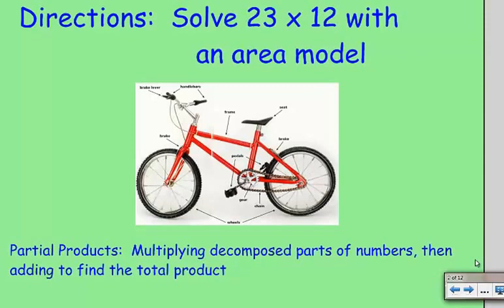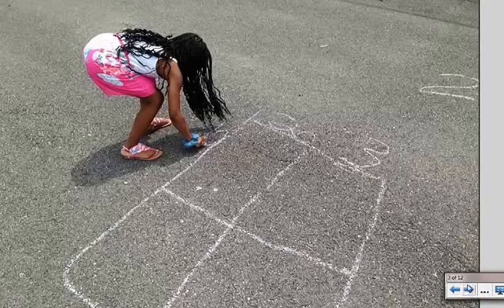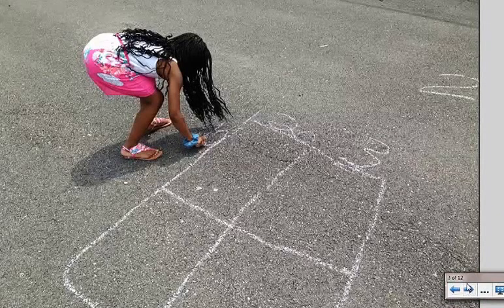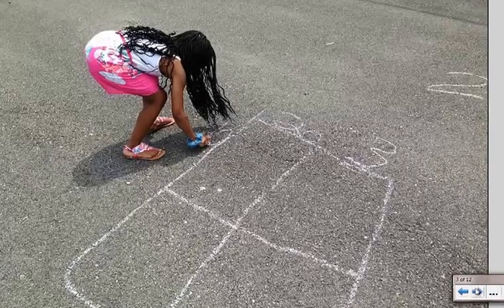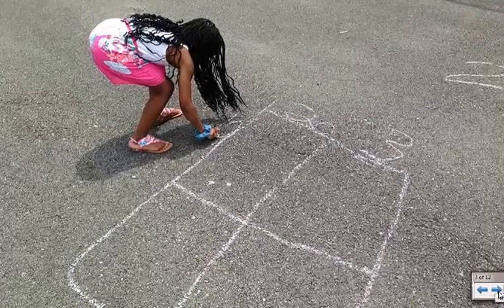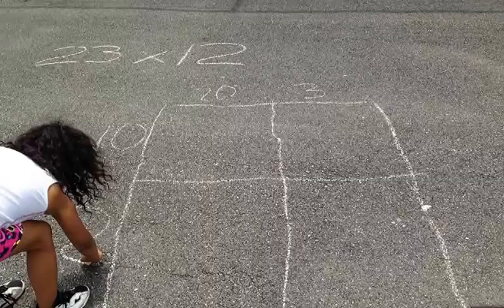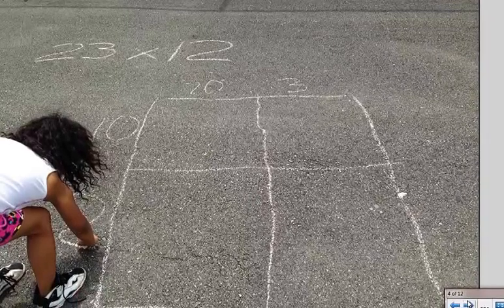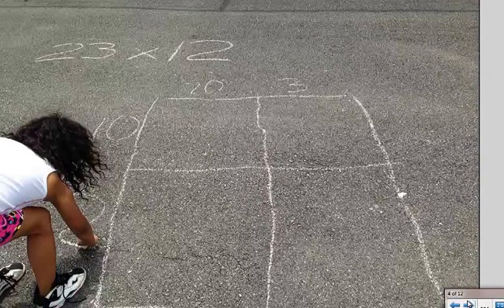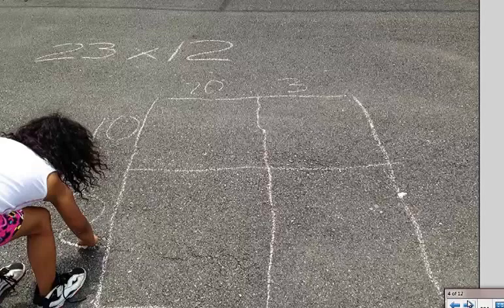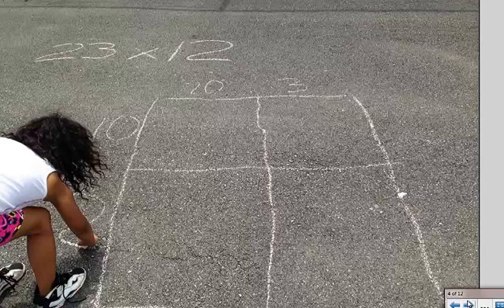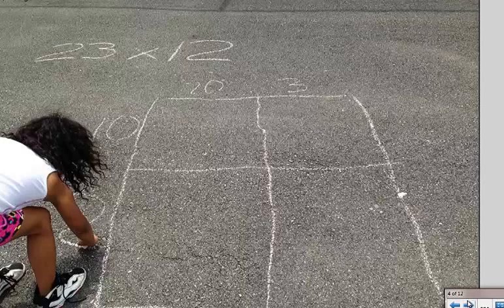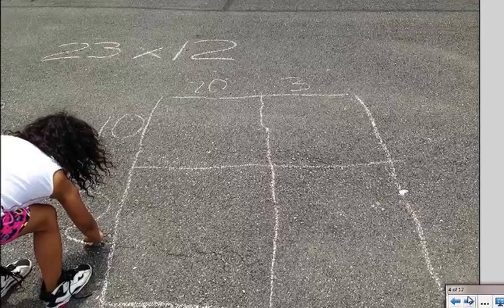Well, that's how multiplication with an area model works. So let's check out their work. So as a part of having fun with the summer challenge, we had them do their area model with sidewalk chalk. And so they made four quadrants to represent the four decomposed place values. So 23 gets split into 20 and 3 and 12 gets split into 10 and 2. So we're working by tens and ones.